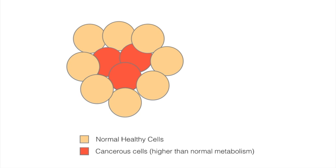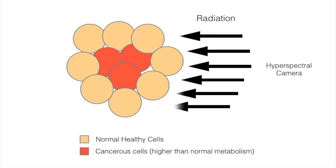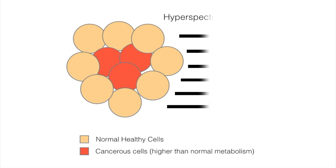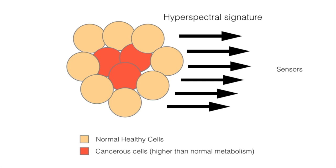The process of detecting cancer using a hyperspectral camera is straightforward. First, the camera will emit hyperspectral radiation towards the desired area, which will be partially absorbed and reflected off the tissue. Then, the camera sensors will receive the reflected hyperspectral signature unique to each region. Based on the data received, the image will be evaluated to determine whether there is evidence of a tumor or not.